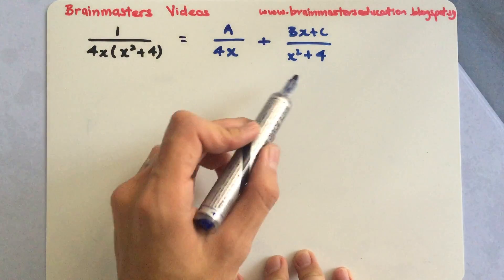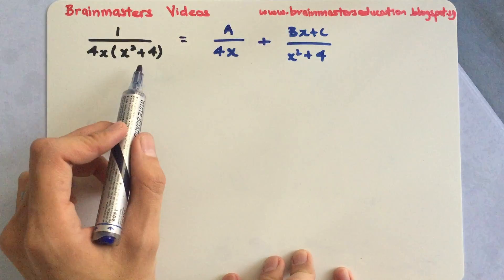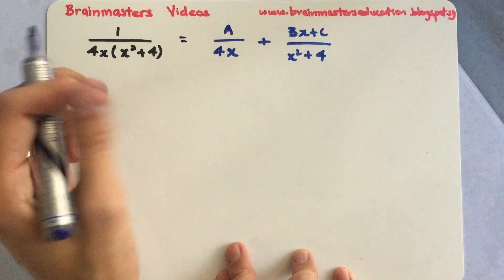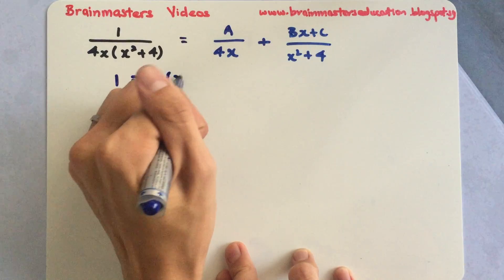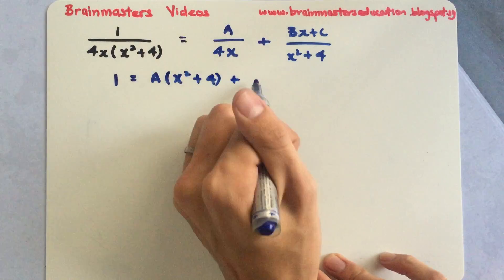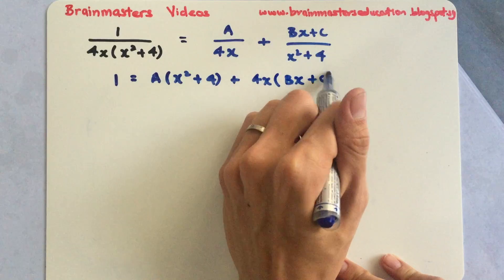Next, you just need to take out the numerator because when the denominators are the same, you are able to cancel them off. For the numerator line, we will have 1 equals to A multiplied to x squared plus 4, plus 4x times Bx plus C.